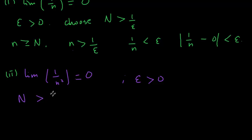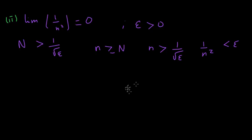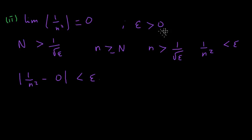So if we do so, then whenever n is greater than or equal to N, n would be greater than 1/√epsilon, so 1/n² would be less than epsilon. Since n is a positive number, this is the same as |1/n² − 0| less than epsilon. So whenever we choose n greater than N, this should be less than epsilon for an arbitrary positive epsilon. This completes our proof.